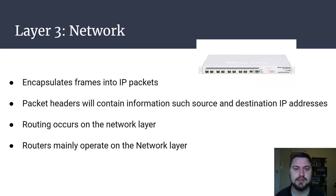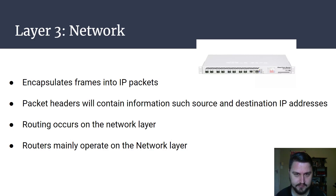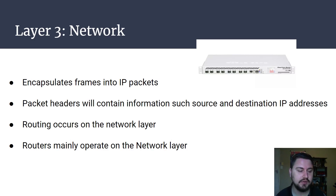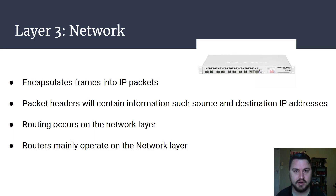Layer three is the network layer. This is where we start seeing IP addresses, and this is also where we start to work with routing. What layer three does is take that frame once it hits the router and encapsulate it into an IP packet. This packet will contain things such as a source and destination IP address. Routers operate at this layer, so you'll see a lot of routing happening here. This is also where we start to see dynamic routing protocols like OSPF and BGP, as well as static routing.